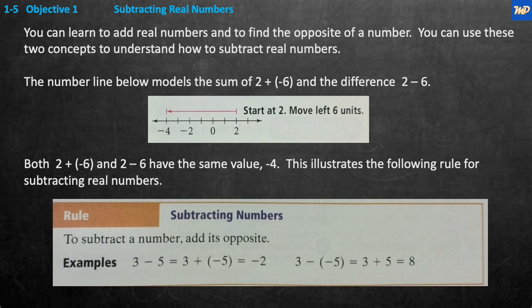Looking at the number line, it says start at 2 — so 2 plus negative 6. Start here at 2 and then add negative 6. When you're adding a negative number, you go to the left — 1, 2, 3, 4, 5, 6 — and when you get all the way down to the left, negative 6, you end up with negative 4. That's the answer.